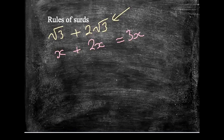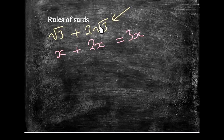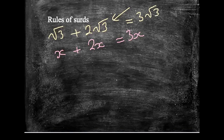If I've got root 3 and I'm adding on 2 root 3, you could think of this in terms of something plus 2 lots of something. I'm fairly sure that your algebra will be good enough to be able to say that x plus 2x is the same as 3x. And in fact, we can do the same kinds of things here with surds. If I've got one lot of root 3 here, and two more lots of root 3 here, in total, I can say that I've got 3 root 3.